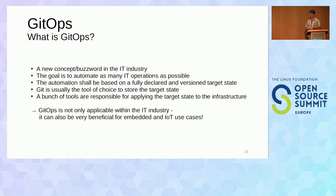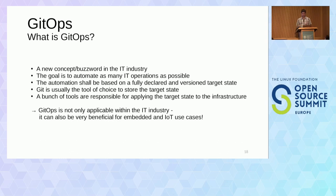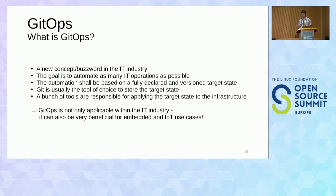One slide about GitOps. From my point of view it's a new concept and buzzword in the IT industry. The goal is to automate as many IT operations as possible. The automation shall be based on a fully declared and versioned target state. Git is usually the tool of choice to store that target state, and a bunch of tools are responsible for applying it to the infrastructure. Importantly, GitOps is not only applicable in IT — it also fits perfectly into the embedded and IoT world.